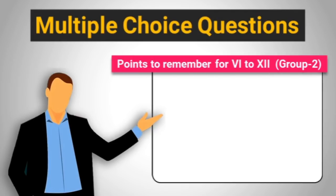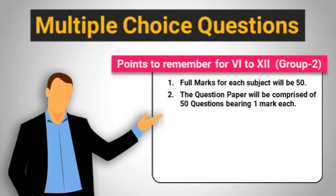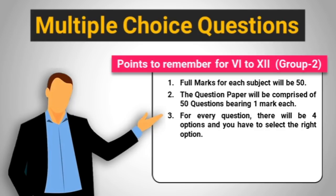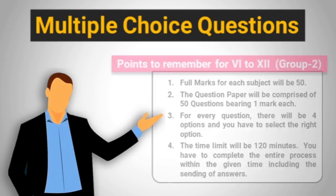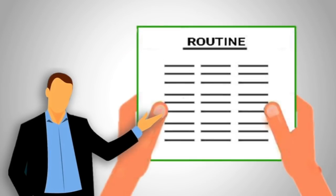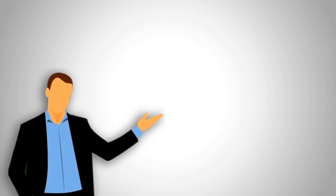Points to remember for classes 6 to 12: 1. Full marks for each subject will be 50. 3. For every question, there will be four options and you have to select the right option. 4. The time limit will be 120 minutes. You have to complete the entire process within the given time, including the sending of answers. You will get your routine stating the date and time of examination in due course of time.